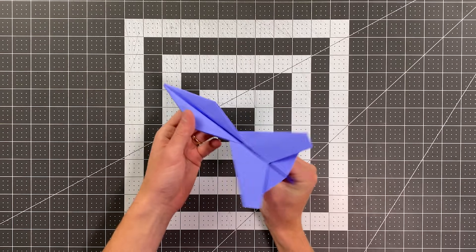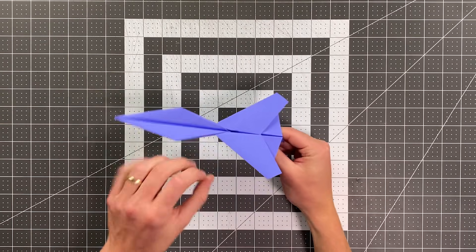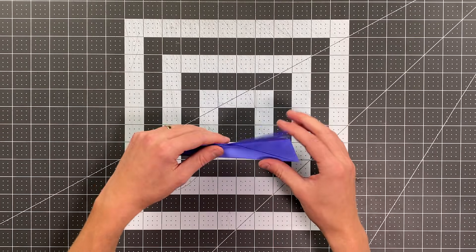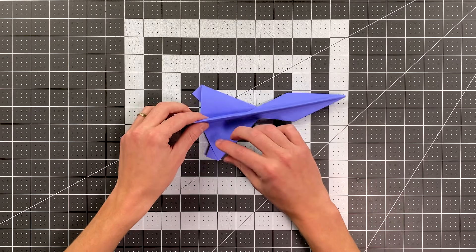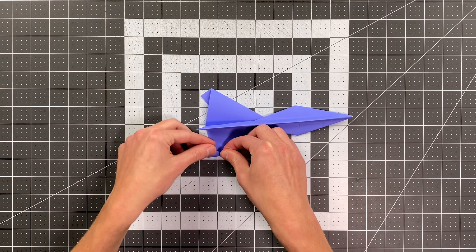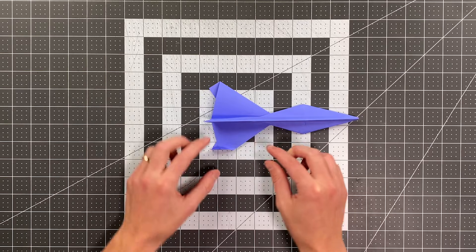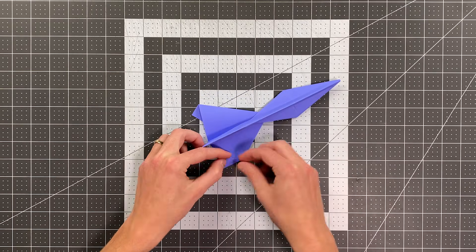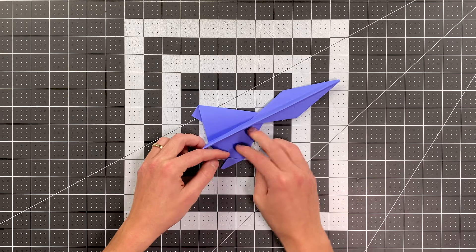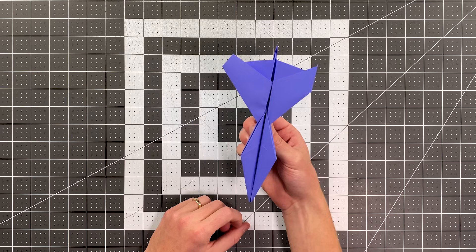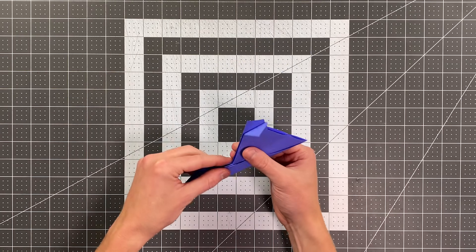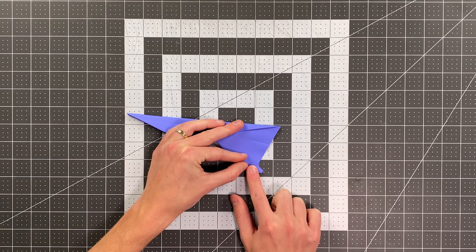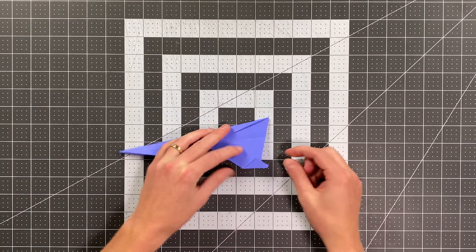And now all we have left to do is fold the winglets. So I like to fold my winglets just past this point here and parallel to the center. So you can see I make them just a little bigger than if I went to that point, and I try to make that parallel to my center crease. If you're using the template, that'll be marked for you. And once I do one side, I can just fold the other side to match. And there you go.